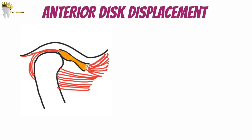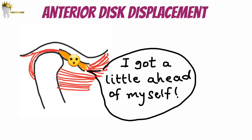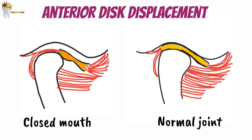Now, the most common type is anterior disc displacement. So let's see what happens during anterior disc displacement. In anterior disc displacement, the disc is positioned anterior and medial to the condyle in the closed mouth position. You can see how this looks different from the normal position — in normal position the posterior band sits right on top of the condylar head, whereas in anterior disc displacement it is situated anterior to the condyle.